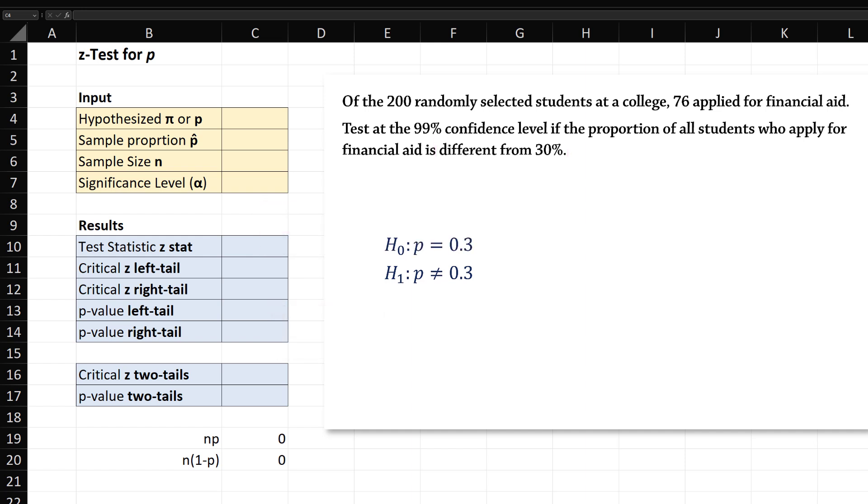Now, let's input the values. From the null hypothesis, we have p equals 0.3. The sample proportion is the number of successes over sample size, so equals 76 over 200. The sample size n is 200.